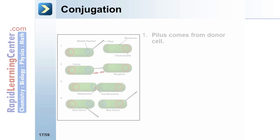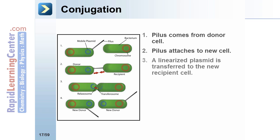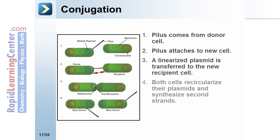Conjugation. In conjugation, step 1, a pilus comes from the donor cell. Step 2, the pilus attaches to the new cell and a linearized plasmid is transferred to the new recipient cell. In step 4, both cells recircularize their plasmids and synthesize a second strand. In step 5, both cells can now donate plasmids.